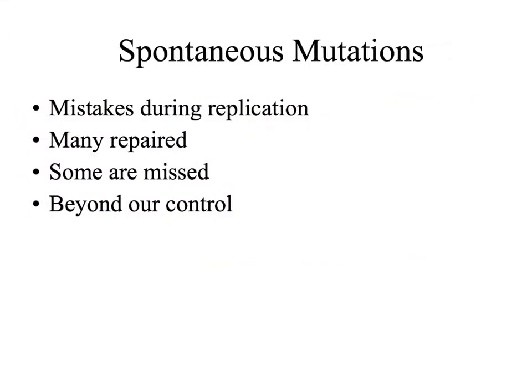The first category is spontaneous mutations. These are the ones that are beyond our control — mistakes made during replication. Many of these mistakes are actually repaired. Eukaryotic cells have machinery and enzymes that are able to proofread the DNA and repair much of the damage. However, some mutations are missed, and they're beyond our control because we can't control the machinery of replication.